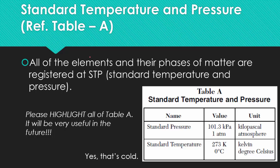Looking at your reference table, let's find table A. Table A talks about what is standard temperature and pressure. All of the elements in their phases of matter are registered at STP. I want you guys right now to, with a highlighter or a colored pencil, highlight all of table A. This information is going to be incredibly useful in the future.